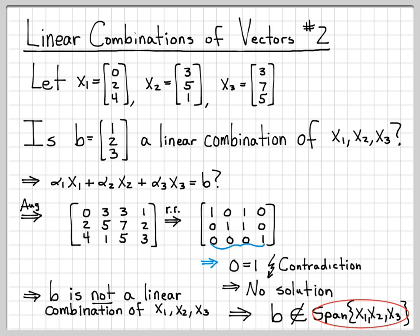So even though this set, the span of x1, x2, and x3, has a lot of vectors, b is not one of them because b is not a linear combination of x1, x2, and x3. So we use this symbol, the not an element of, to say that b is not an element of the span.